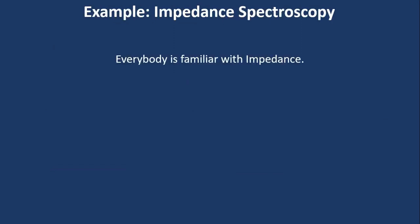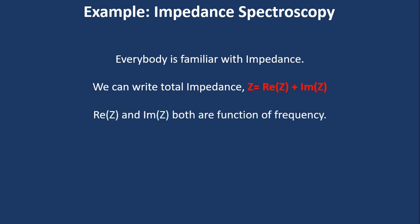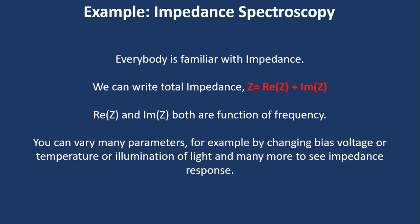So let's discuss impedance spectroscopy. Everybody is familiar with impedance. We can write total impedance Z equal to the real part of Z plus the imaginary part of Z, since impedance is a complex quantity. Both the real part and imaginary part of impedance are functions of frequency.